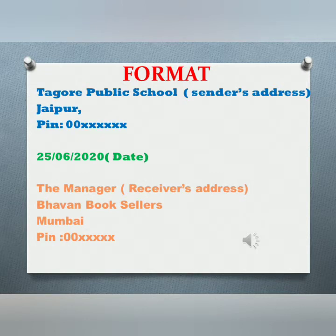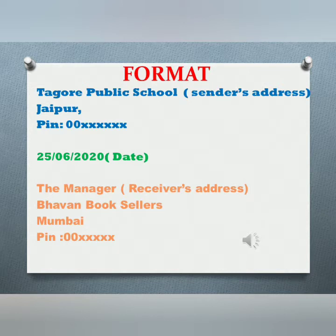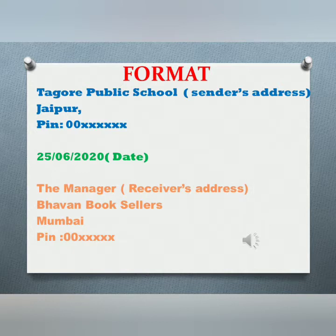Now let us see the format of a letter of placing an order. You begin with the sender's address — for example, Tagore Public School, Jaipur, and the pin code is a must. If you don't know the pin code, you can write 00XXX. Leave one line, then write the date. After that, write the receiver's address — for example, the Manager, Bhavan Booksellers, Mumbai, pin code 00XXX.